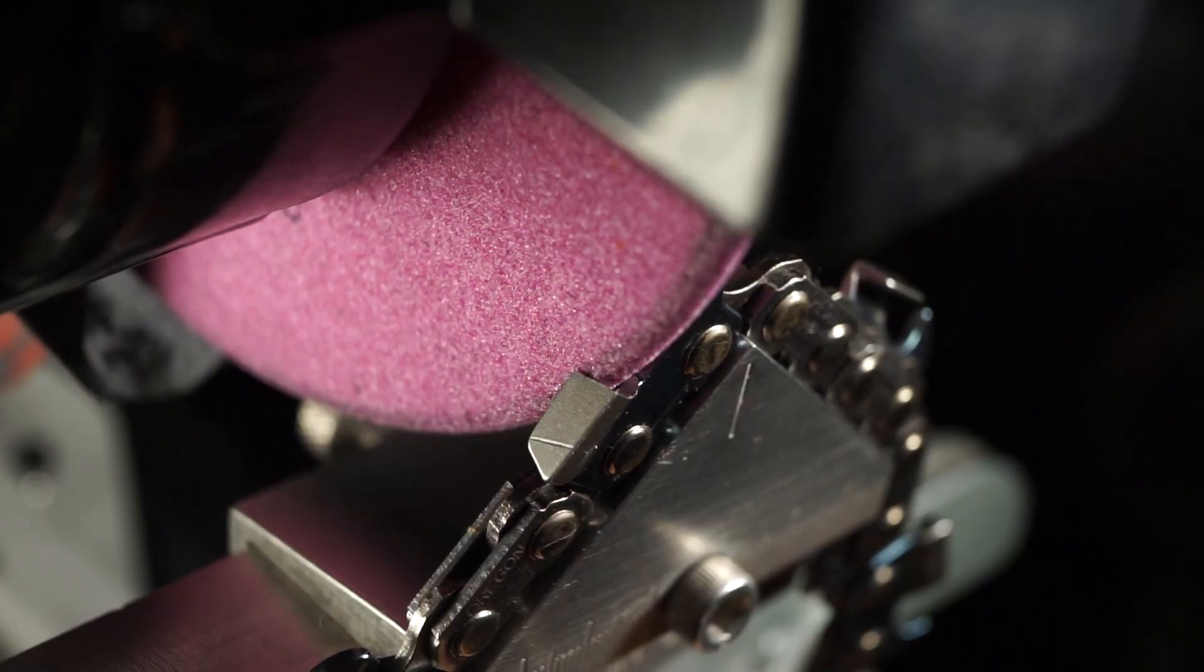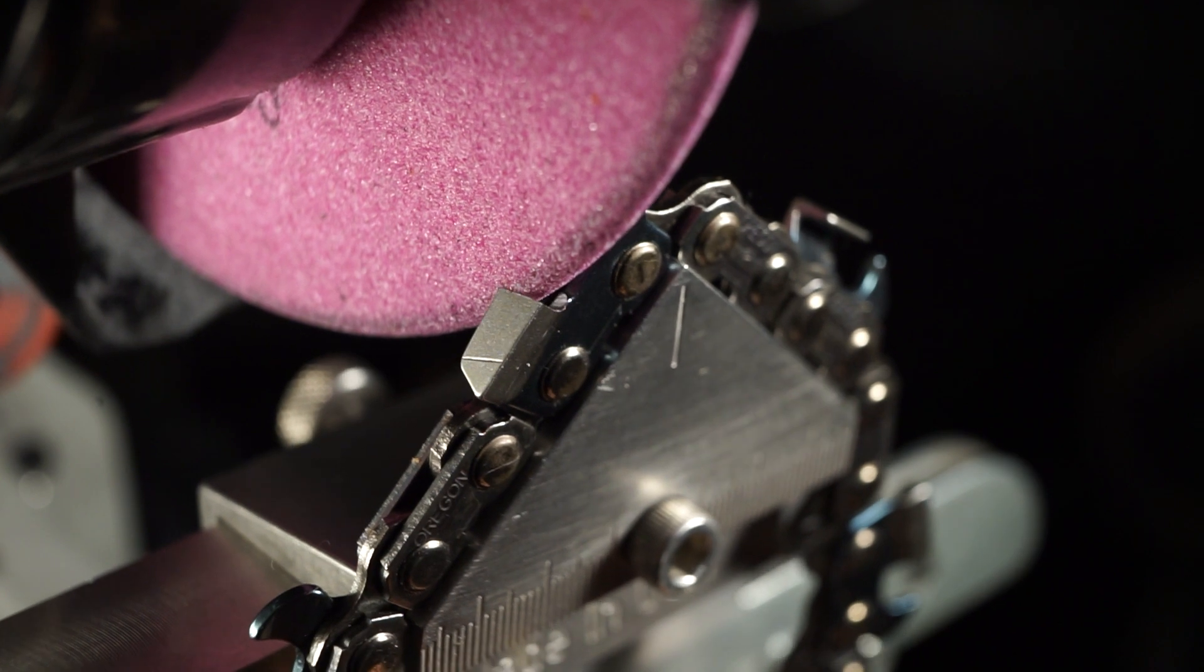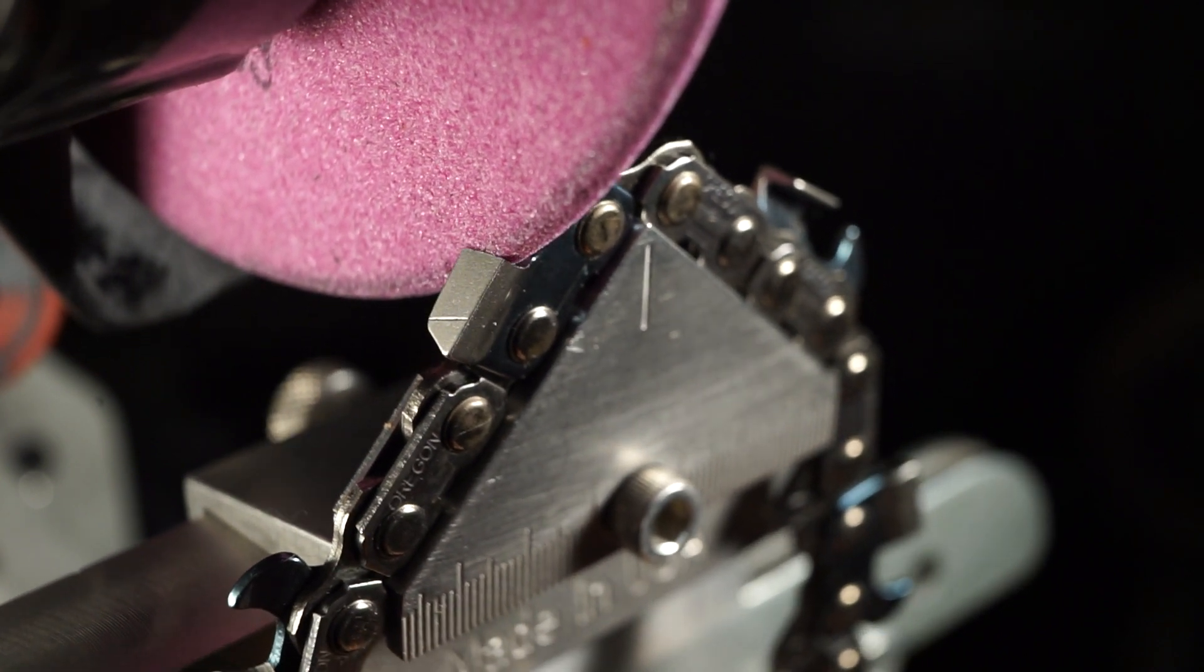As well, if you notice that you're getting into the chassis, you can go ahead and use the 10 degree tilt to lessen the side plate sharpness.